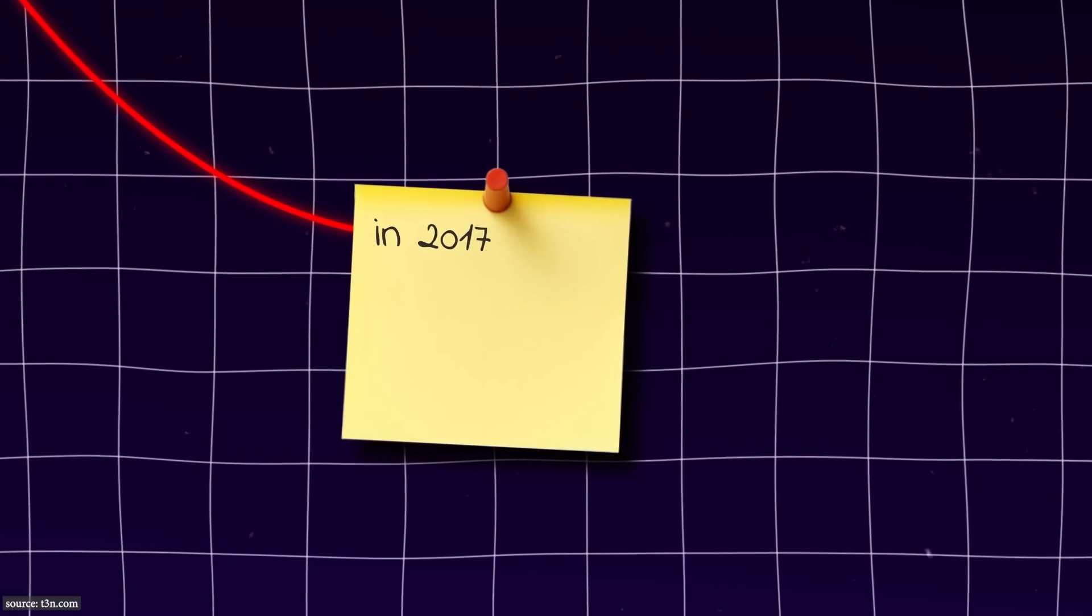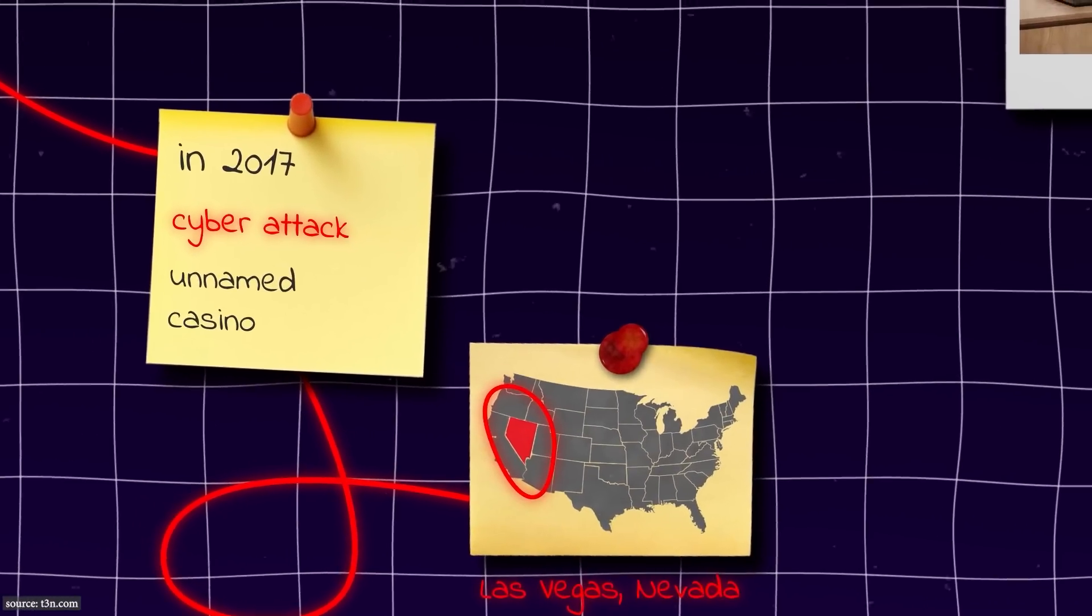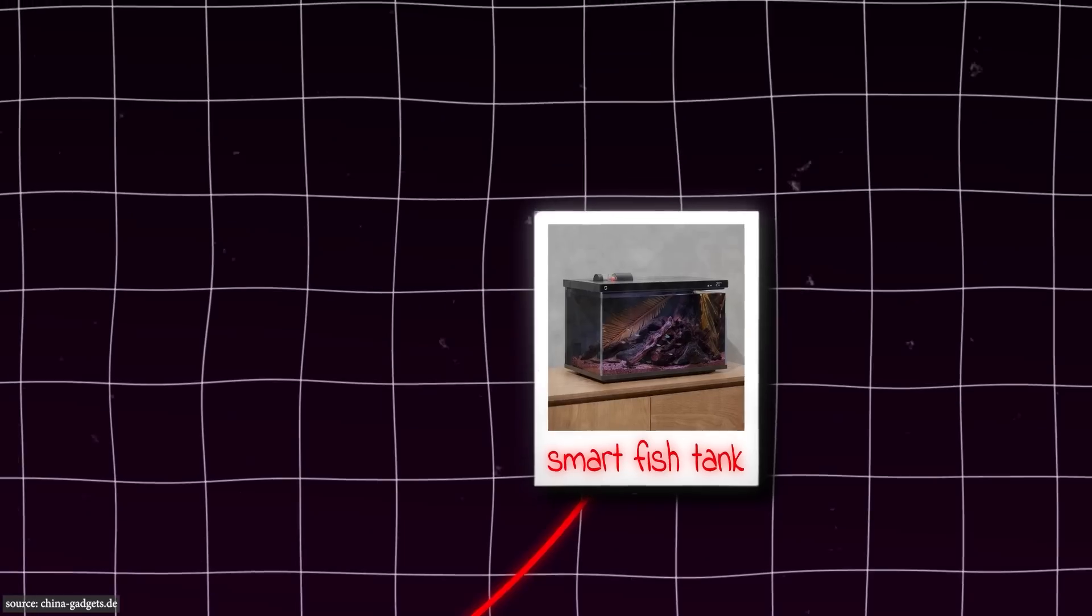Yet in 2017, a sophisticated cyber attack targeted an unnamed casino through an unexpected vector, a smart fish tank.